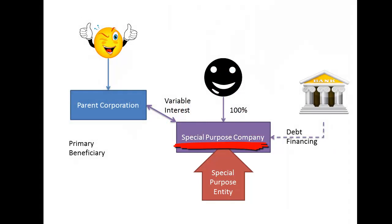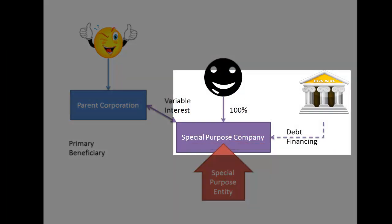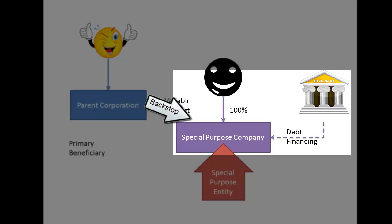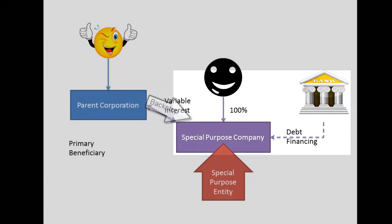Whatever its special purpose, it's structured this way as a means of attracting lower cost sources of financing. A lender may not be as interested in financing a manufacturing facility within the parent company, where its security is subject to all sorts of other operational risks. However, with the plant now segregated into a separate entity, and where the parent corporation makes certain assurances to cover any shortfalls in the financing repayment, the lender is more willing to extend cheaper financing at a higher loan-to-value ratio.